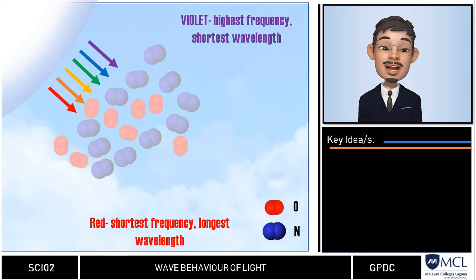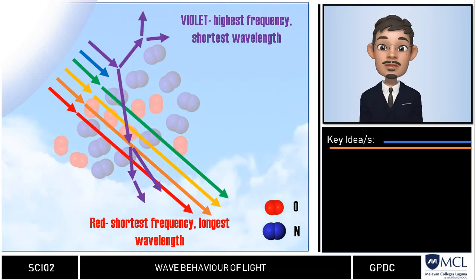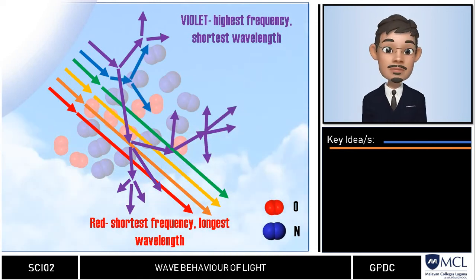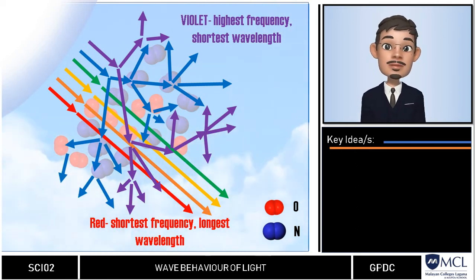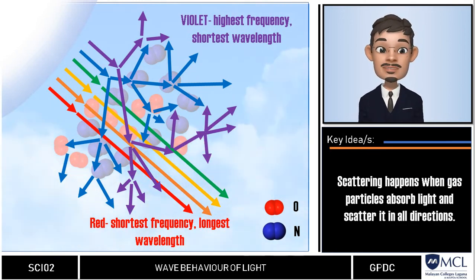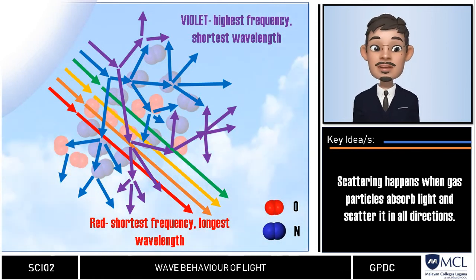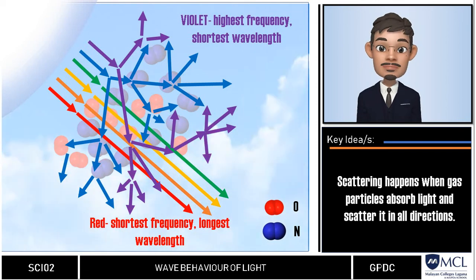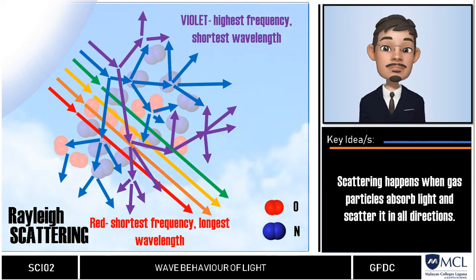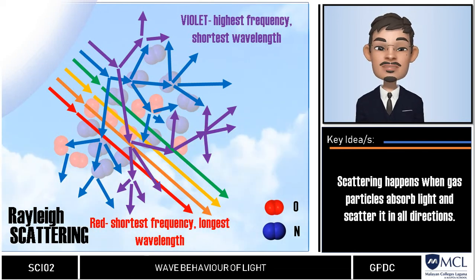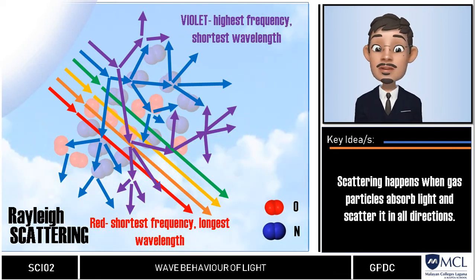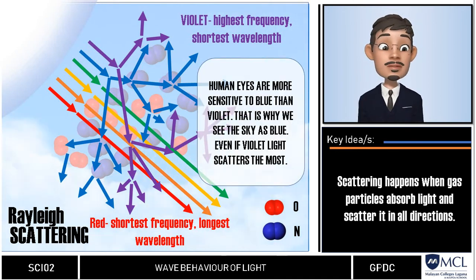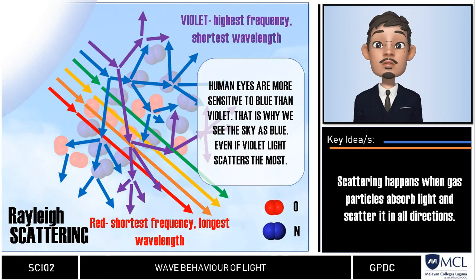Nitrogen and oxygen gases in the atmosphere scatter violet the most, followed by blue, green, and so on. This scattering happens because these gas particles absorb light and scatter it in all directions. This scattering of light, which is our first wave behavior of light, depends on the relative sizes of the particles and the wavelength of light — this is what we call Rayleigh scattering. But you may ask: if violet, which has the highest frequency and shortest wavelength, is scattered the most, why does the sky appear blue instead of violet? This is because our eyes are more sensitive to blue light than violet light. That is why we see the sky as blue.